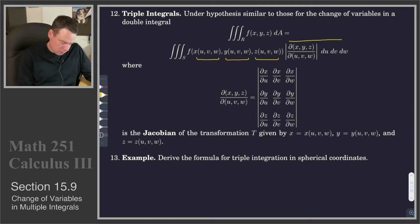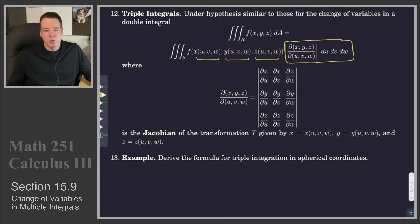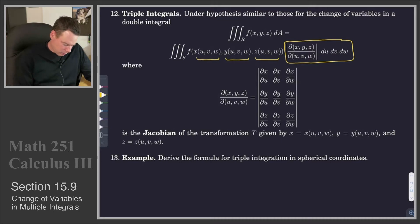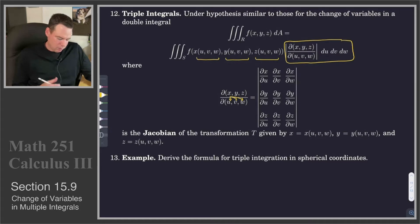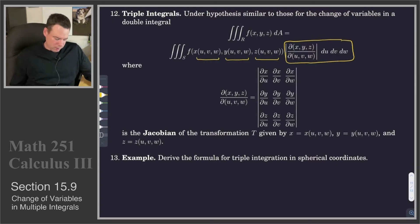Our volume element update involves the absolute value of the Jacobian with du, dv, dw. The Jacobian in this case is just like it was for two variables — we just now have an extra row and column. So for three variables, the first row is the derivatives of x with respect to u, v, and w; then the derivatives of y with respect to u, v, and w; and z with respect to u, v, and w. Once you've got that matrix of partial derivatives, you compute the determinant, and that's the Jacobian.